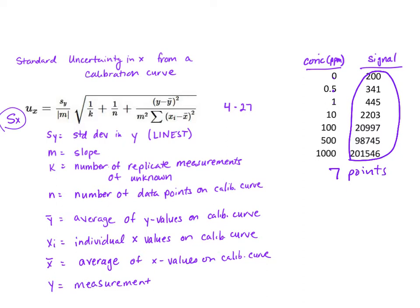So you actually take the average of these values to get y bar. We also see in our equation we have x sub i. These are the individual values of x on the calibration curve, and so this shows up here in this summation. This is actually a large piece of the equation.